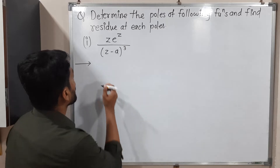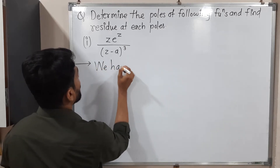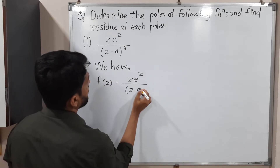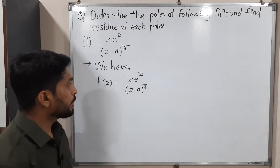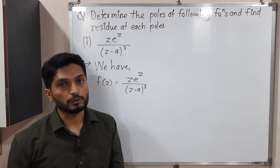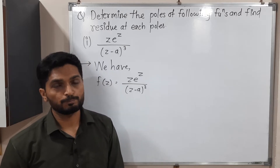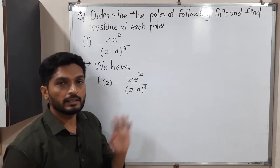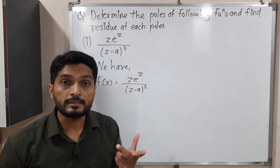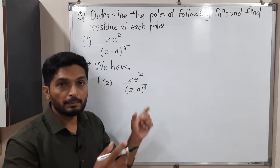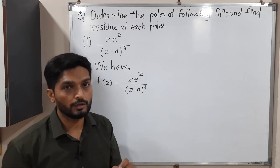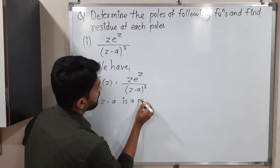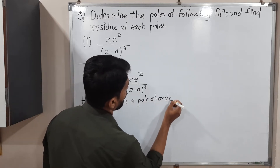So let me write the given function first. The function we have is z·e^z divided by (z minus a)^3. A pole we can easily find here — it is a very simple function. We find the point where the denominator will be 0. If we put z equal to a, we get a minus a equals 0. So z equal to a is a pole. Since that bracket has power 3, z equal to a is a pole of order 3.